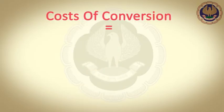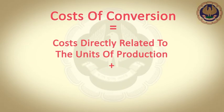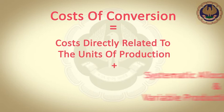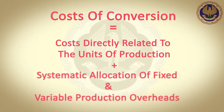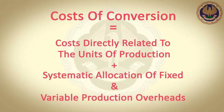Moving on, cost of conversion is equal to costs directly related to units of production such as direct labor, plus systematic allocation of fixed and variable production overheads that are incurred in converting materials into finished goods.